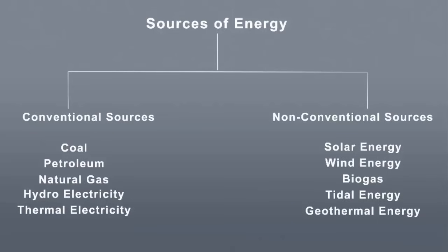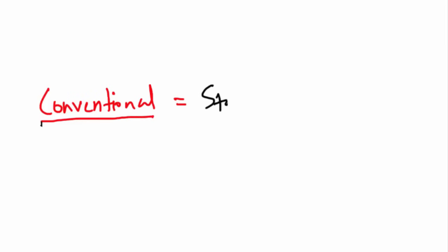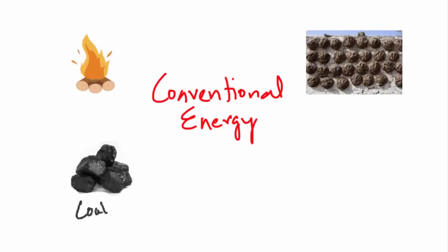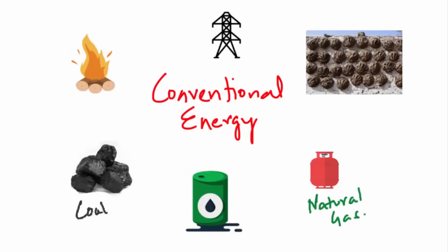So what is conventional energy? The word conventional means standard, regular, or something that is generally done. If you look at the conventional energy sources like firewood, cow dung cake, coal, petroleum, natural gas, and electricity, these all have been in use as a source of energy from ages.